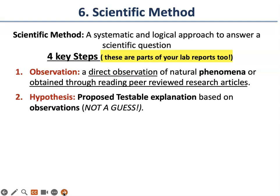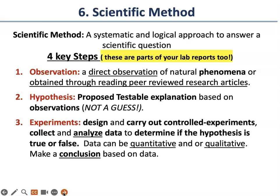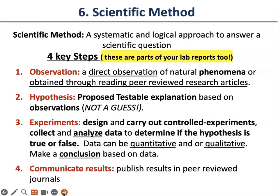Then you make a hypothesis — an explanation that is testable to explain why something is happening. It is not a guess. Then you design and carry out controlled experiments. You collect and analyze data to determine if the hypothesis is true or false. Data you collect can be quantitative or qualitative. Then you make a final conclusion based on analyzing your data, which tells you if your hypothesis is true or false. Finally, you communicate your results by publishing in a peer-reviewed journal.